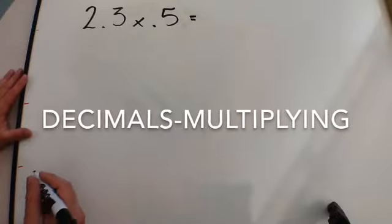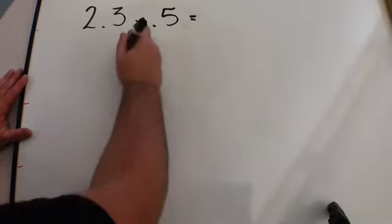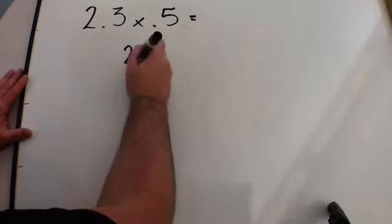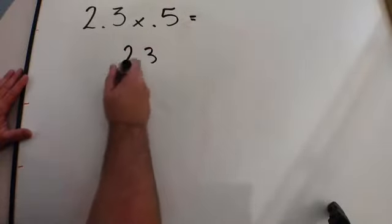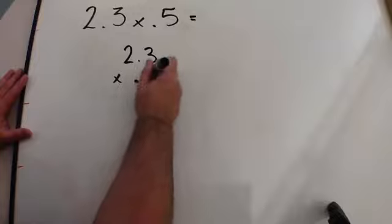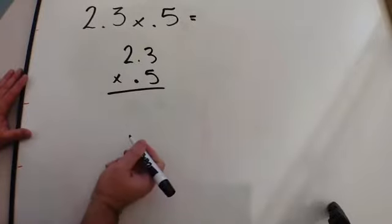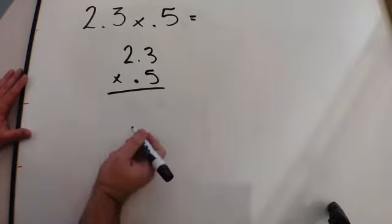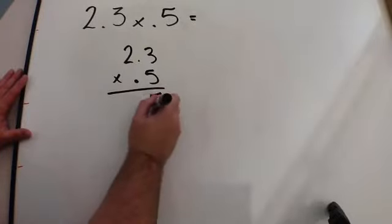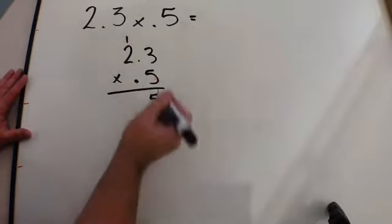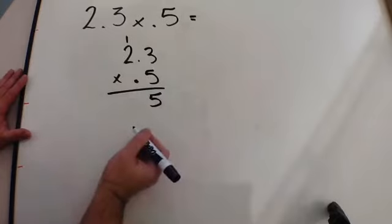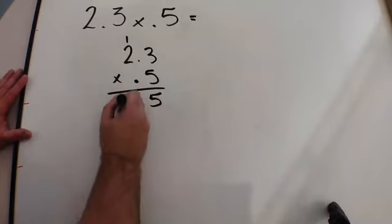We're multiplying 2 and 3 tenths by 5 tenths. We're going to change the format. We're going to multiply the 3 tenths by the 5 tenths. 2 times 5 is 10, plus 1 is 11.